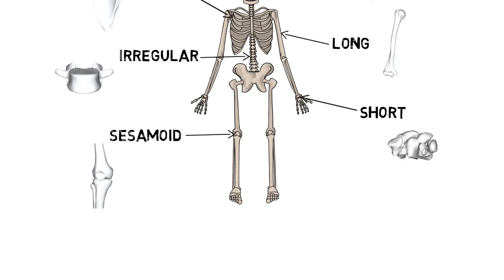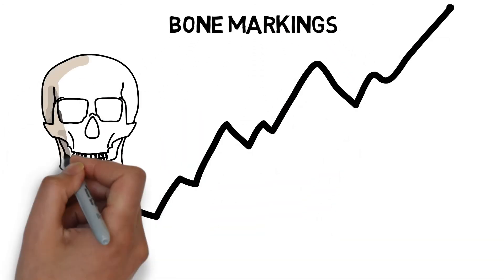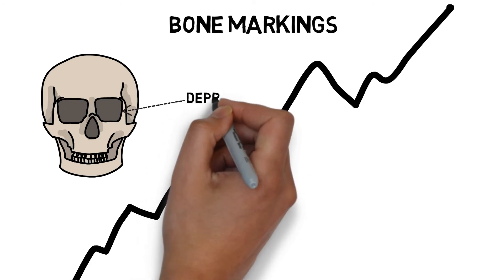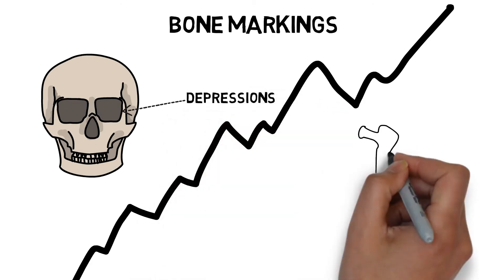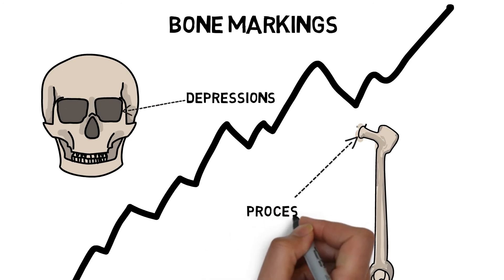All bones have unique responsibilities, and in order to help them to successfully perform their individual tasks, the majority of bones have different surface markings. Depressions are flattened or indented portions of bone, and processes are protruding sections of the bone where muscles, tendons, and ligaments can attach.